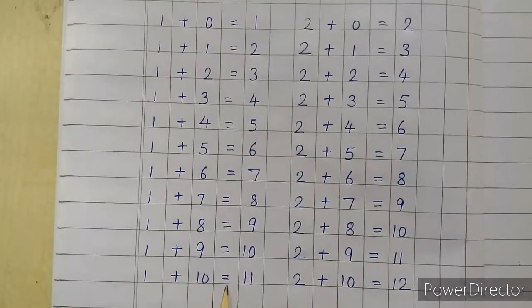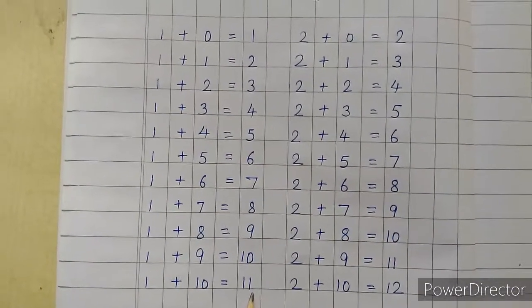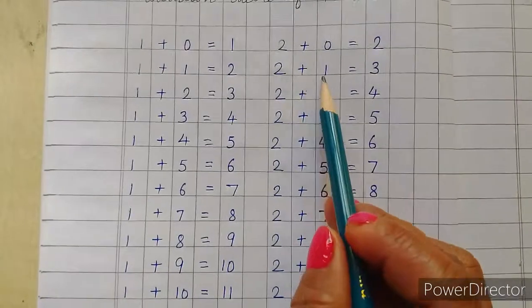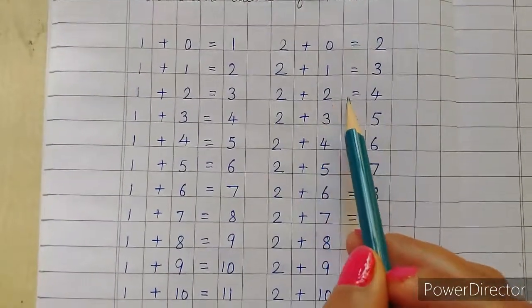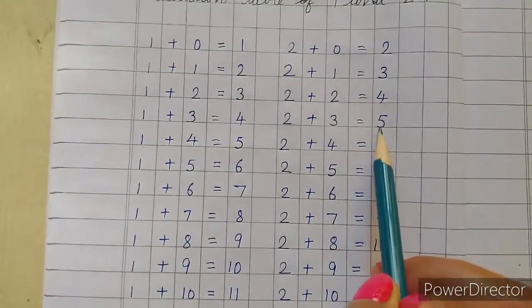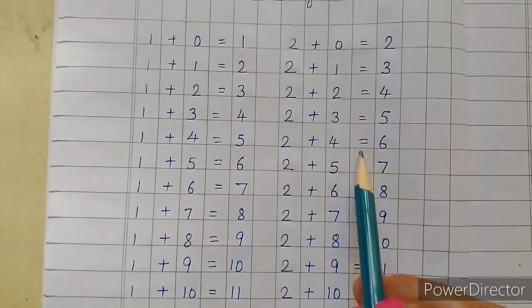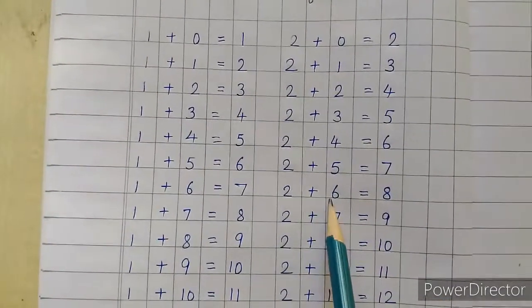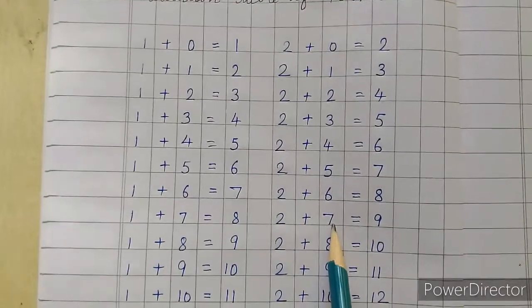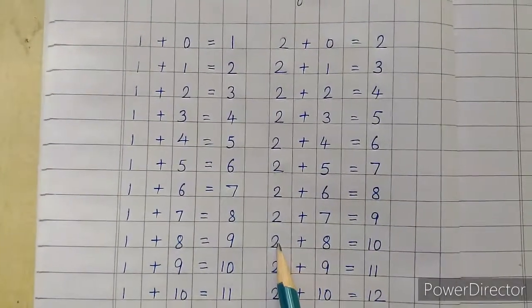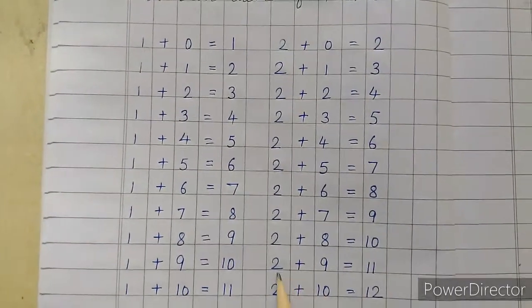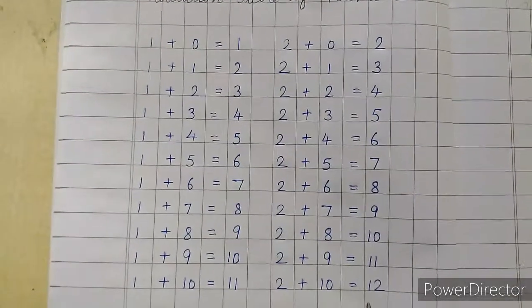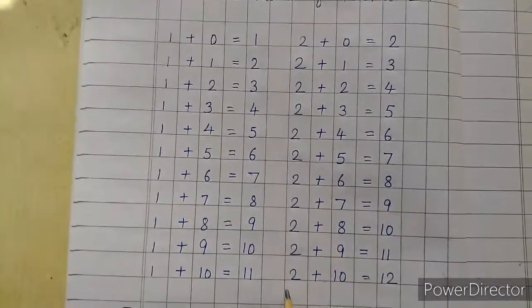Now table of 2. 2 plus 0 is equal to 2. 2 plus 1 is equal to 3. 2 plus 2 is equal to 4. 2 plus 3 is equal to 5. 2 plus 4 is equal to 6. 2 plus 5 is equal to 7. 2 plus 6 is equal to 8. 2 plus 7 is equal to 9. 2 plus 8 is equal to 10. 2 plus 9 is equal to 11. 2 plus 10 is equal to 12. So in this way you have to write these table of 1 and 2.